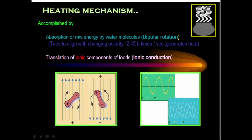The food matrix contains other components too — organic, inorganic, polar, non-polar, ionic, covalent. They all produce high friction and heat is generated as a result of this friction. Heat is generated by alignment of dipolar molecules — not only water, but all polar molecules in food will interact with the electric field of microwaves.